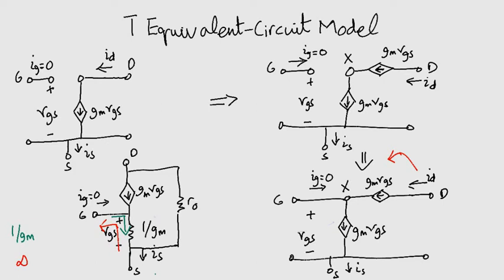Also if in the T model, we replace the voltage controlled current source with a current controlled current source, it will look like this.